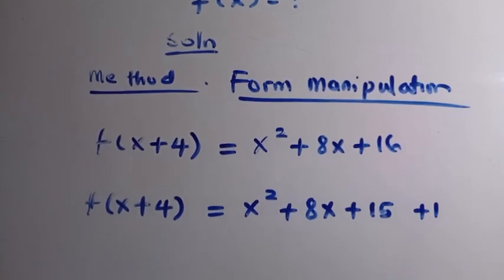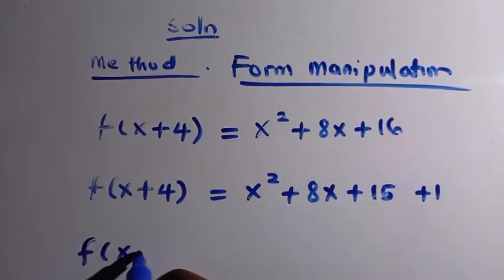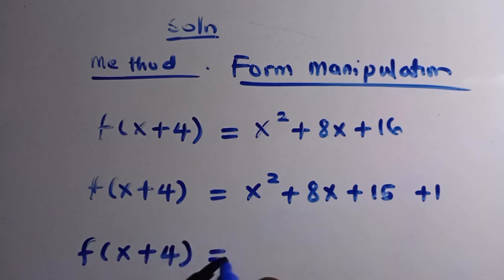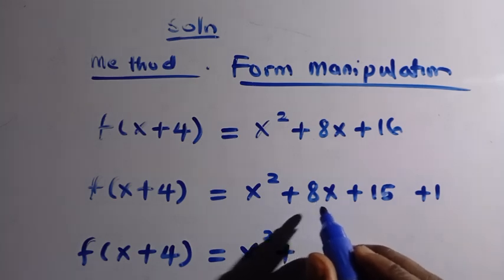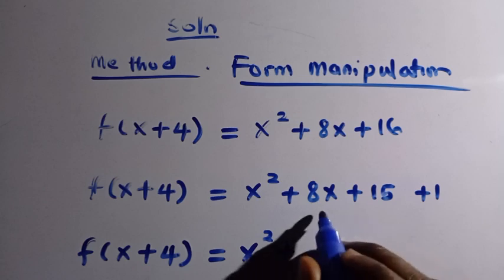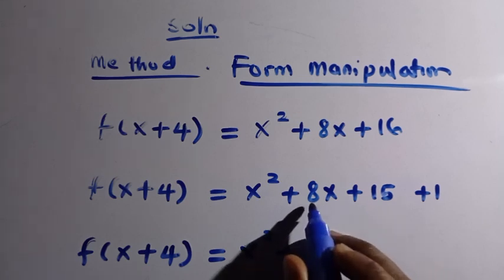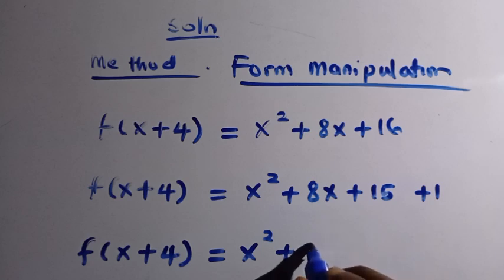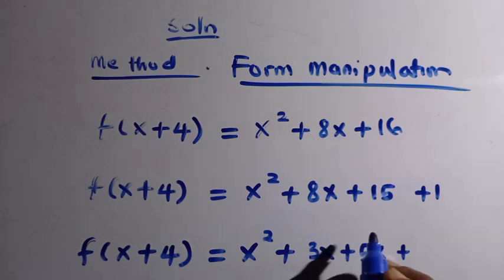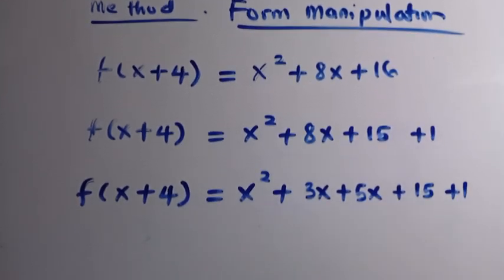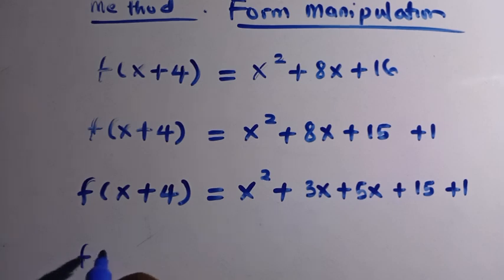So here we have f of x plus 4 equals x squared plus 8x plus 15, plus 1. We can factorize x squared plus 8x plus 15. Looking for two numbers whose sum is 8 and product is 15: the two numbers are 3 and 5, since 3 plus 5 equals 8 and 3 times 5 equals 15.